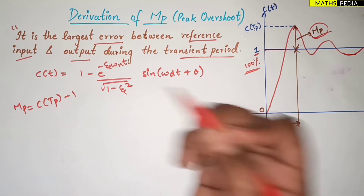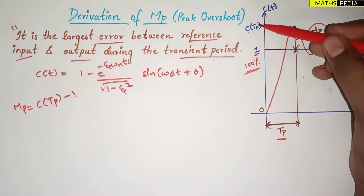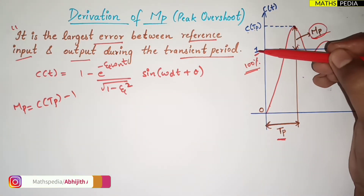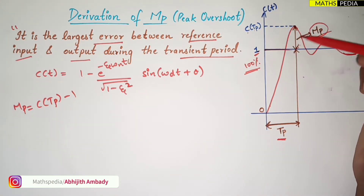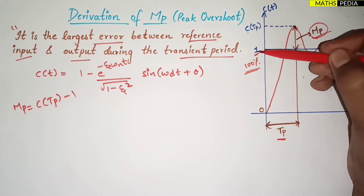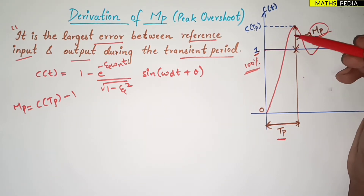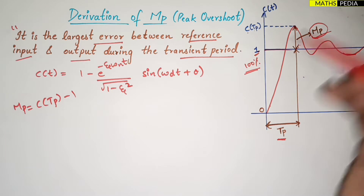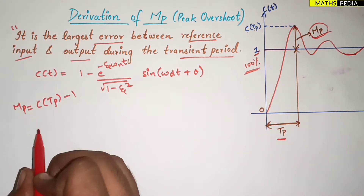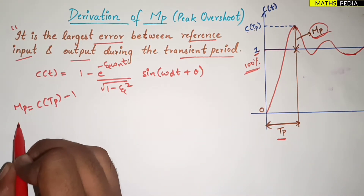Mp is defined as c(tp) minus one. We compute c(tp) and then subtract one to get Mp.